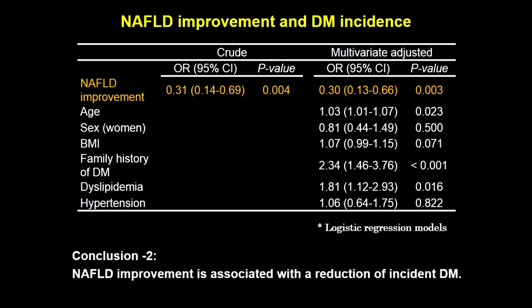The key question is: when liver function improves, does this correlate to the occurrence of diabetes? And here you can see that improvement is highly significantly correlated with diabetes incidence during follow-up. Liver improvement is associated with a reduction of incident diabetes. This large study from Asia establishes a link between non-alcoholic fatty liver disease and diabetes.